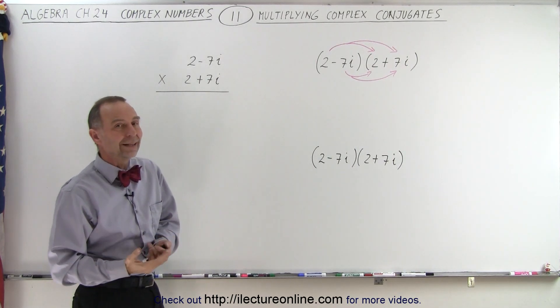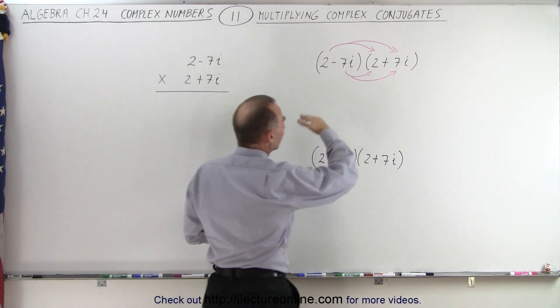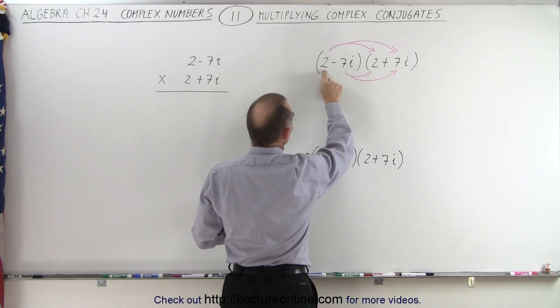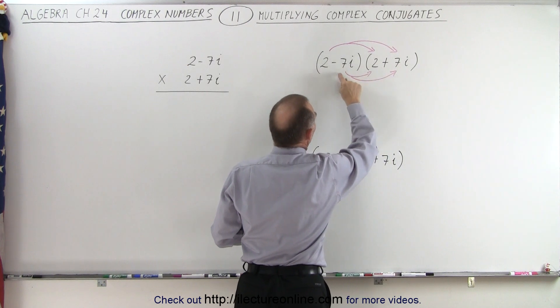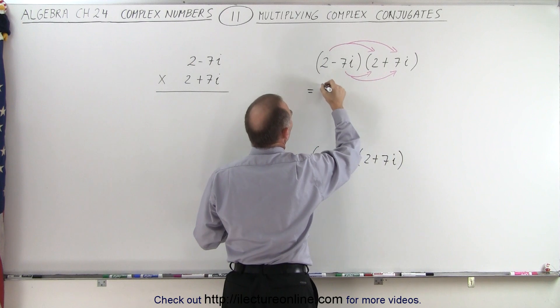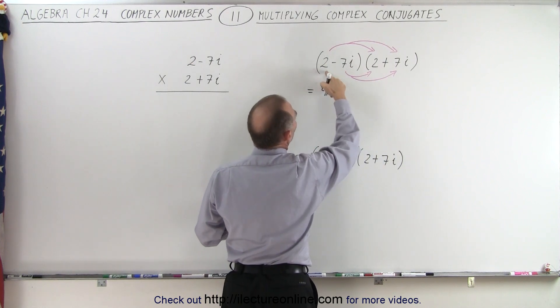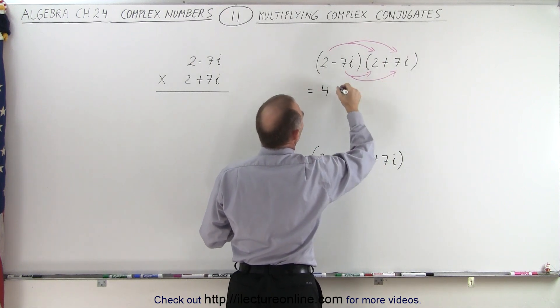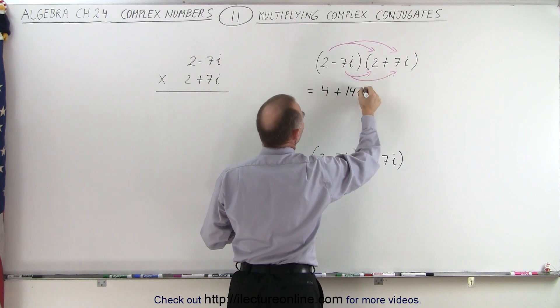Let's show you why that is the case. We're going to use the same technique. Multiply the 2 times each of the two terms here and the minus 7i times each of the two terms. So this becomes 2 times 2, which is 4. 2 times a positive 7i, which gives us 14i.